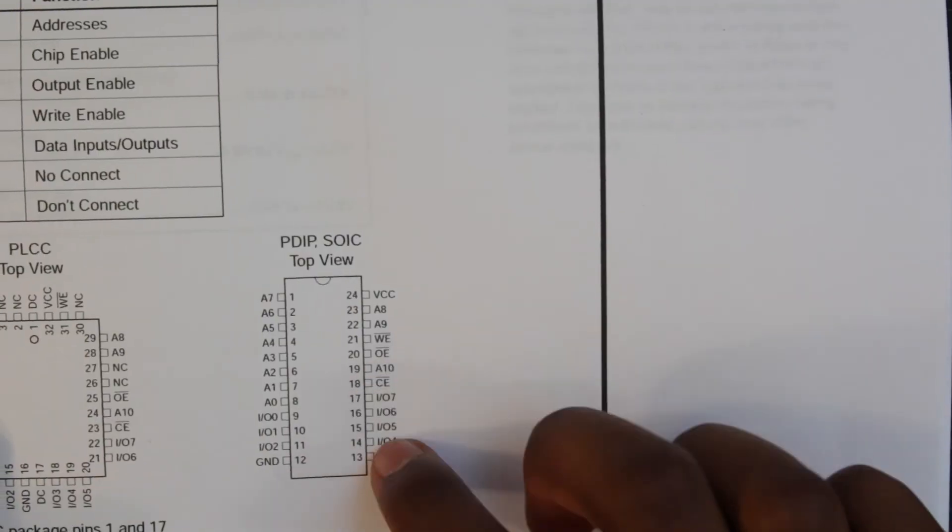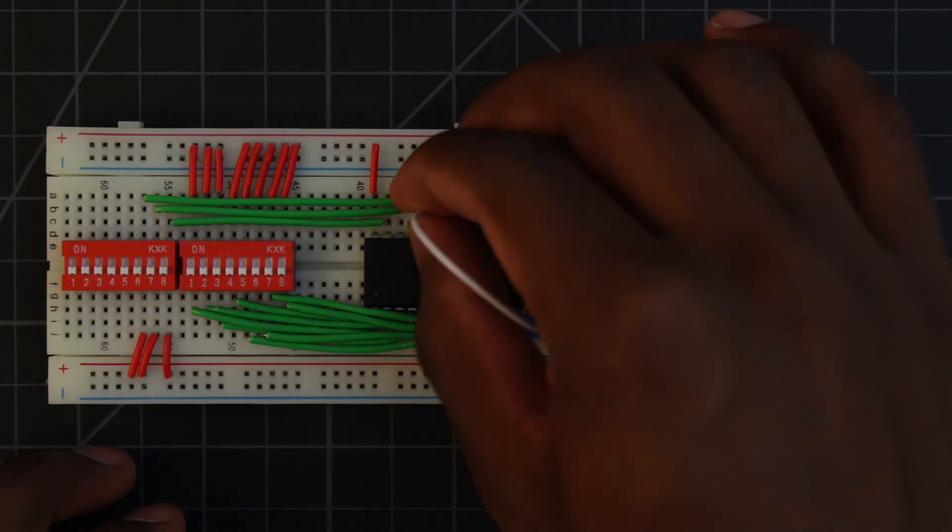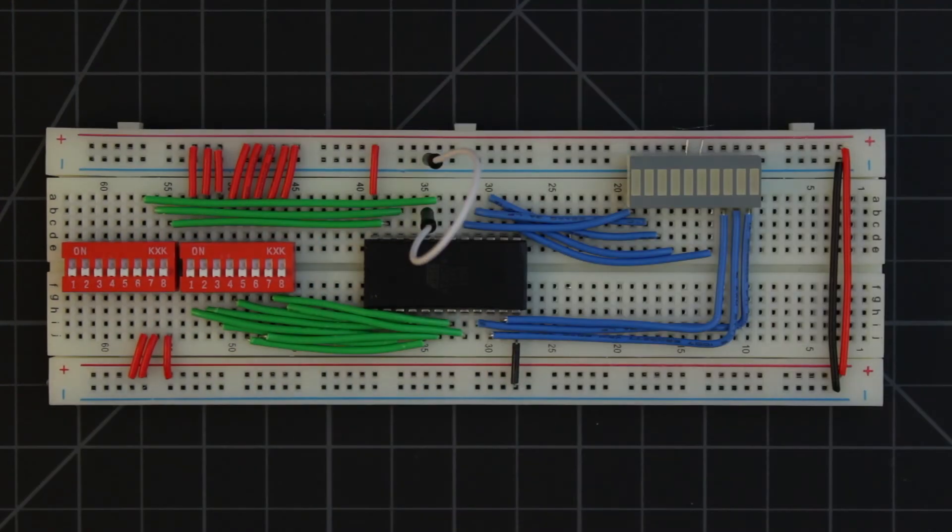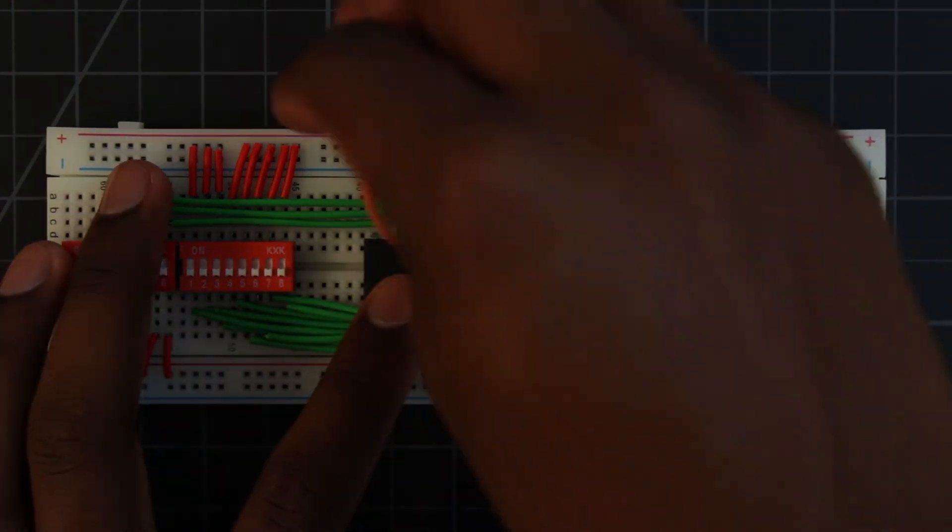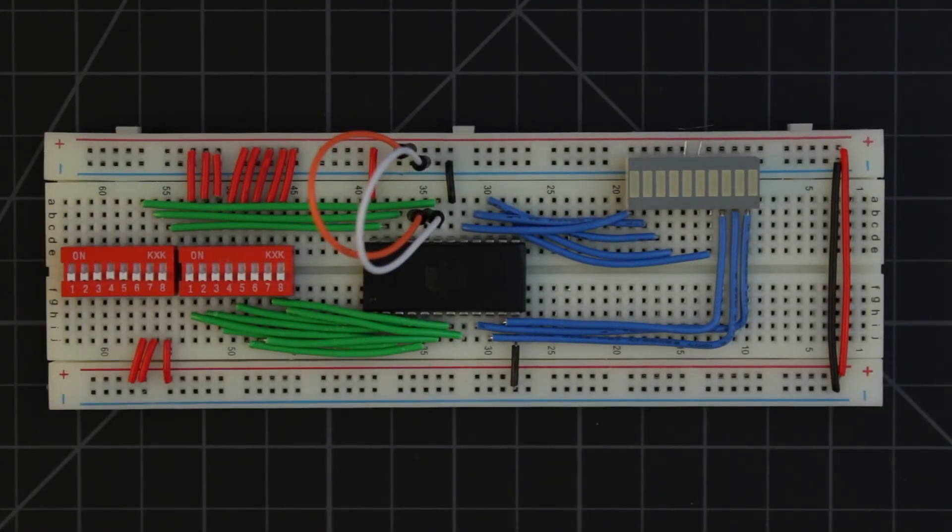Lastly, we need the write output and chip enable. The output enable needs to be changeable, so we'll use a jumper. The write enable too, although we won't deal with it right now, we'll use a jumper. The chip enable we can tie low, because there won't be a time when we won't need it enabled.